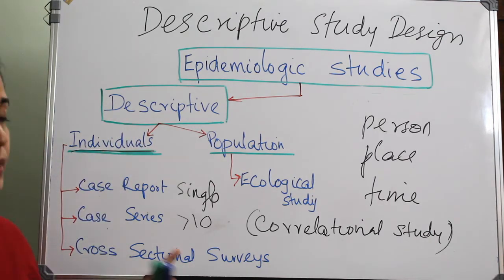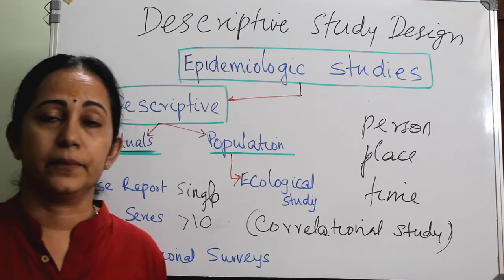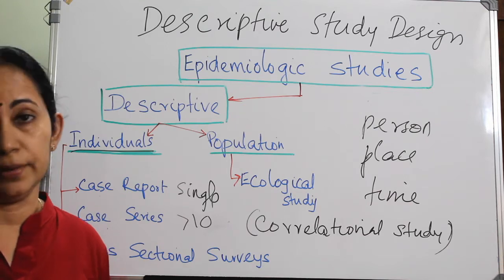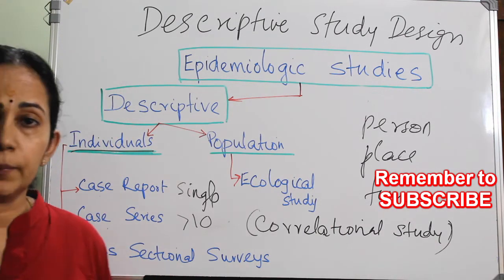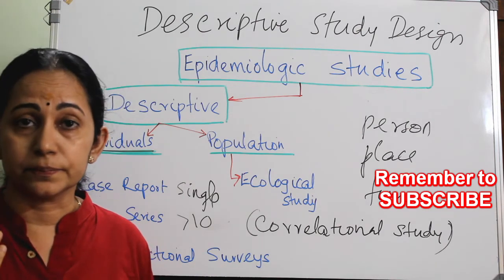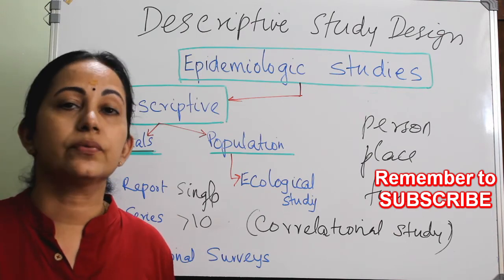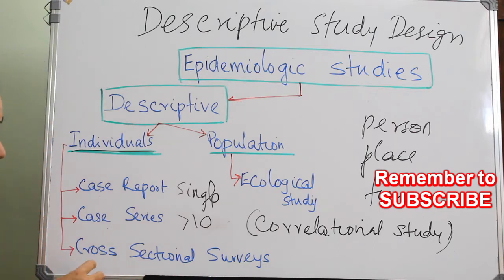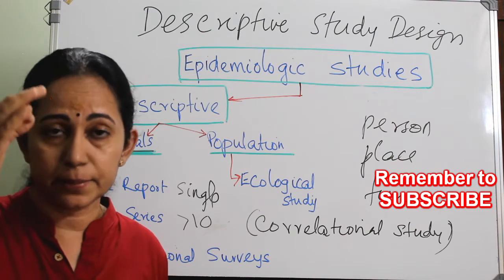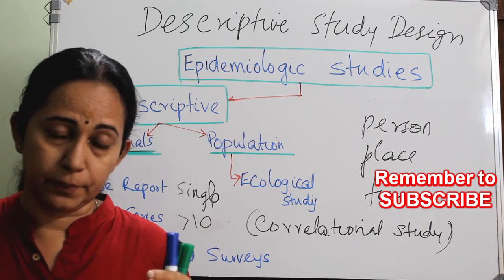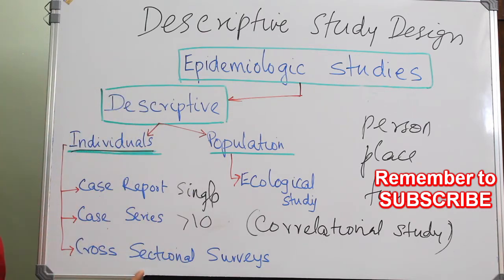Cross-sectional survey is another type of descriptive study design; the most apt example is a census study. In India we had a census in 2011 — people from the health department came to your house and asked about your whereabouts, how many members are in the home, occupations, income, and food habits. So it is a snapshot of the population. A cross-sectional survey gives the picture of exposure and outcome at a point in time — we are not going backwards or forwards; we are studying the population at that point in time.